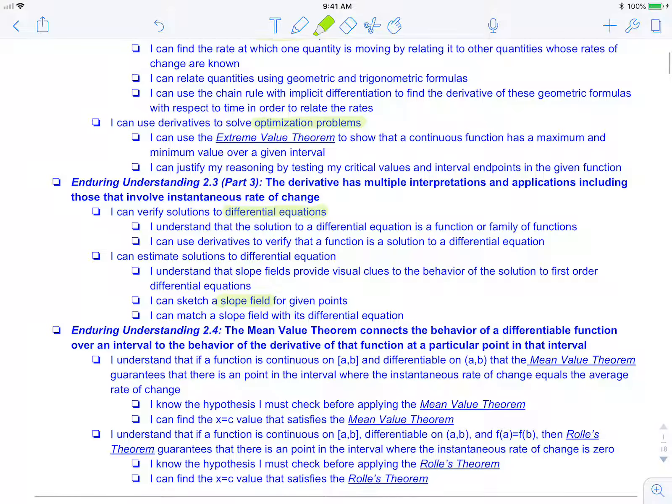The second enduring understanding for this part of the unit is 2.4, which states that the mean value theorem connects the behavior of a function over an interval to the behavior of the derivative over that same interval.